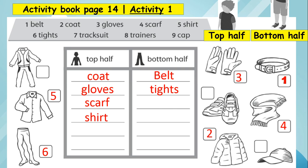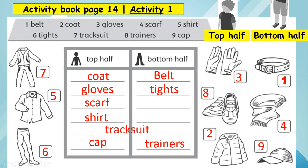Number seven: tracksuit — where do you wear a tracksuit? A tracksuit goes on both the top half and bottom half. Good job. Number eight: trainers — on the bottom half. And cap — on the top half. Good job everybody, that's it! These are the answers for activity book page 14.